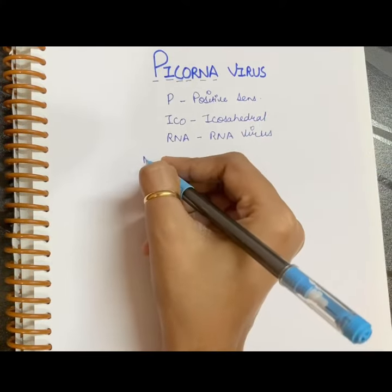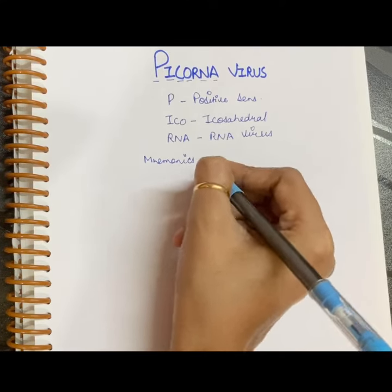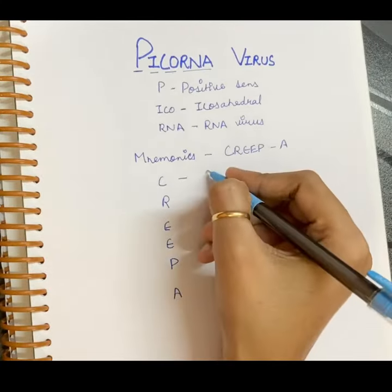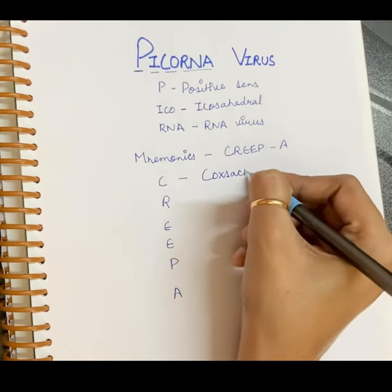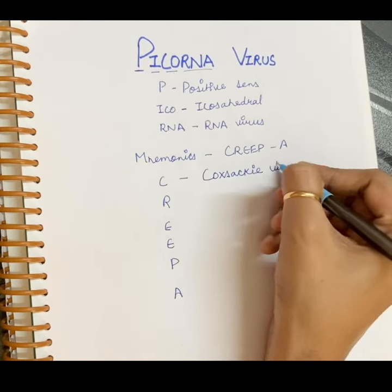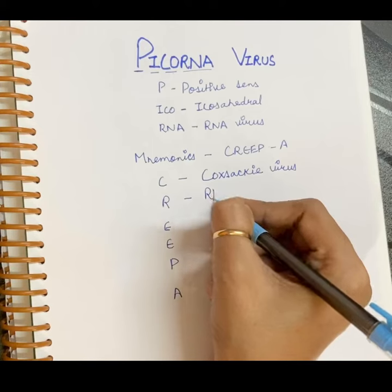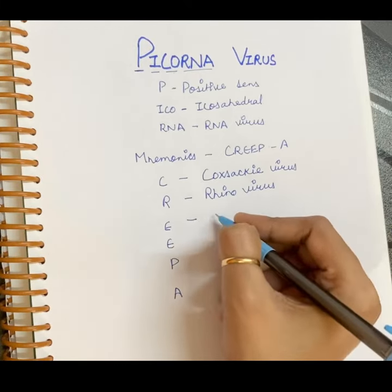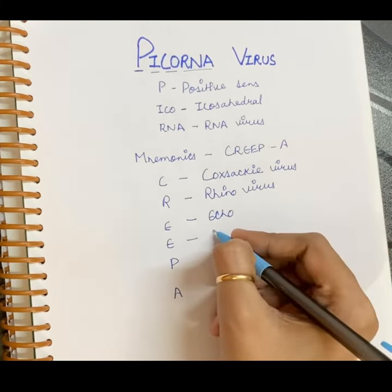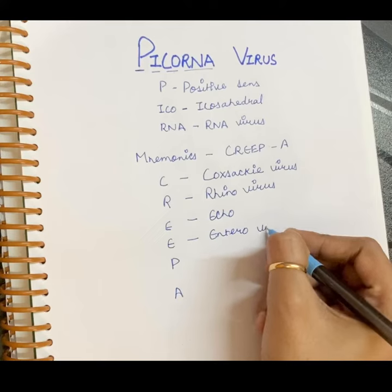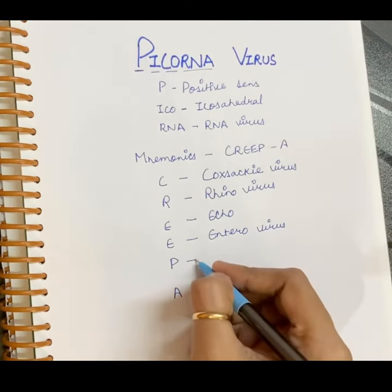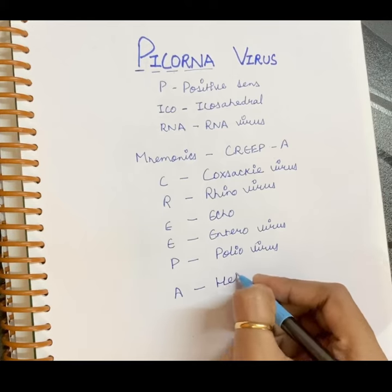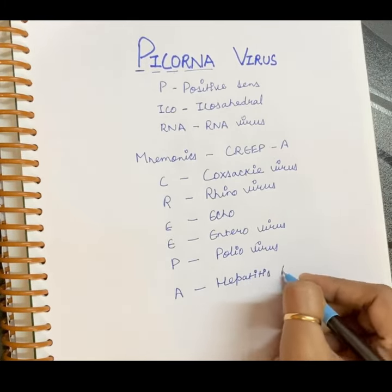By this simple mnemonic: CREEP A. Here C stands for Coxsackievirus, R stands for rhinovirus, the first E stands for echovirus, the second E stands for enterovirus, P stands for poliovirus, and A stands for hepatitis A virus.